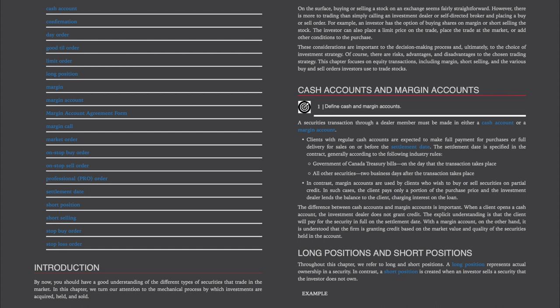Introduction. By now, you should have a good understanding of the different types of securities that trade in the market. In this chapter, we turn our attention to the mechanical process by which investments are acquired, held and sold. On the surface, buying or selling a stock on an exchange seems fairly straightforward. However, there is more to trading than simply calling an investment dealer or self-directed broker and placing a buy or sell order. For example, an investor has the option of buying shares on margin or short selling the stock. The investor can also place a limit price on the trade, place the trade at the market, or add other conditions to the purchase. These considerations are important to the decision-making process and, ultimately, to the choice of investment strategy.